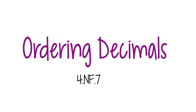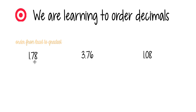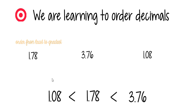Hello, today we will be learning about ordering decimals. Our learning target is: we are learning to order decimals. This means we are going to have problems that say 'order from least to greatest,' and we will have more than two decimals to compare. In this problem we have three: one and seventy-eight hundredths, three and seventy-six hundredths, and one and eight hundredths. By the end of the lesson you should be able to compare and order them.